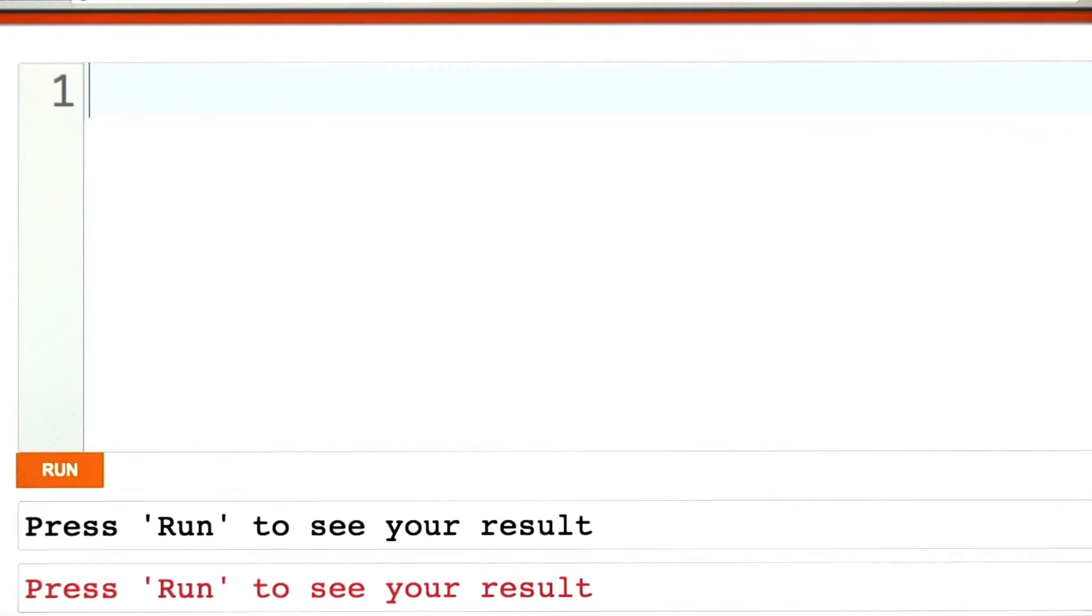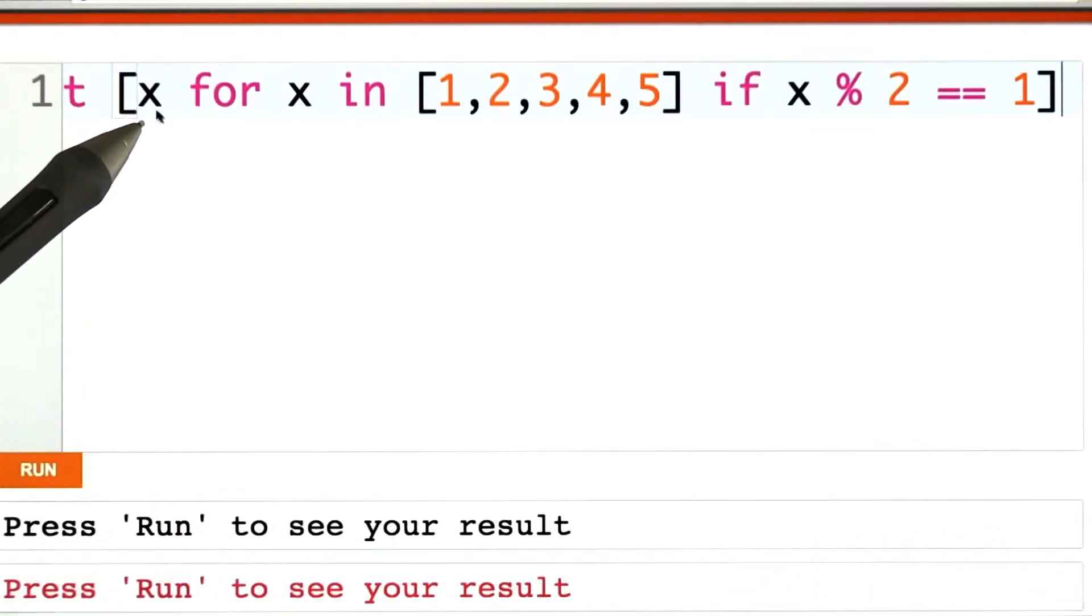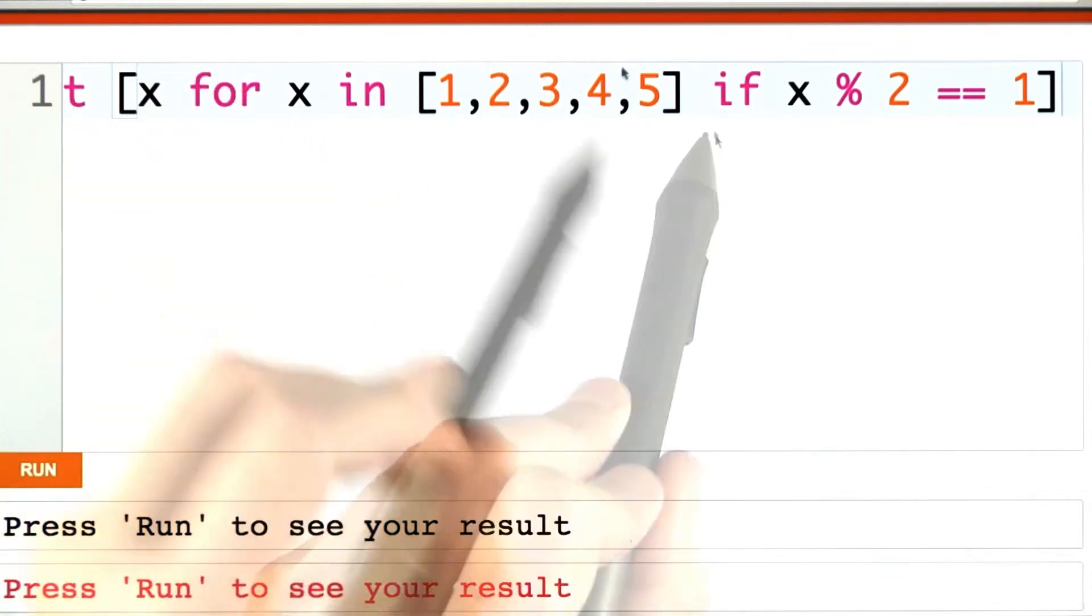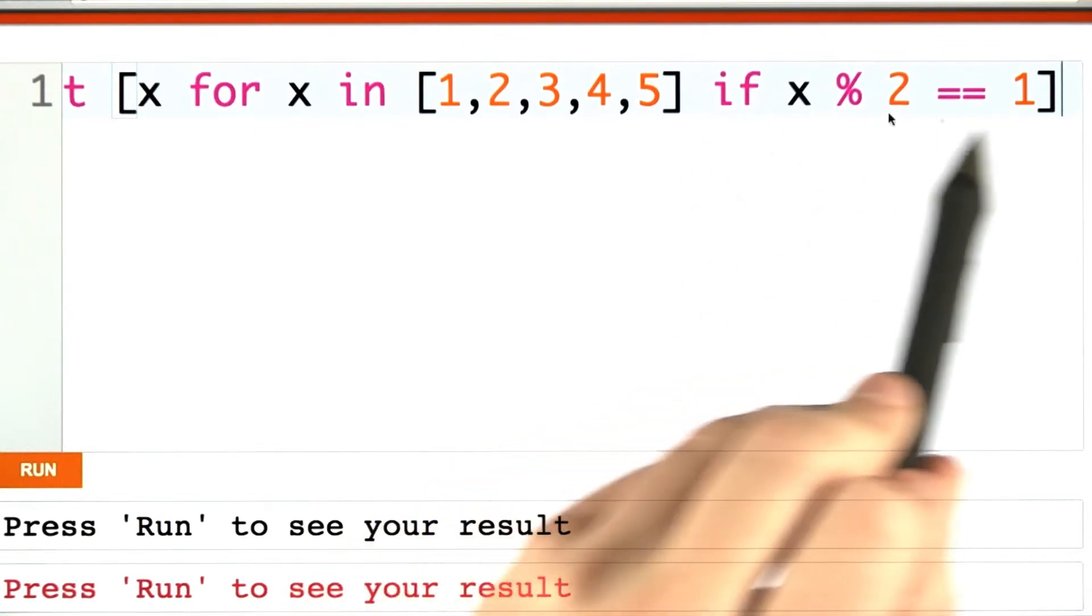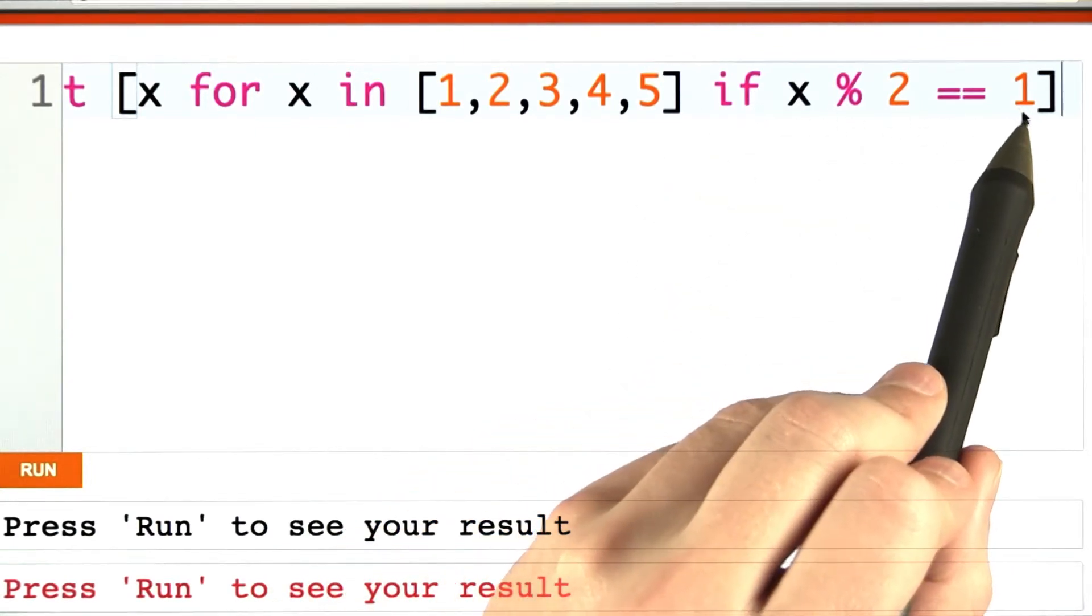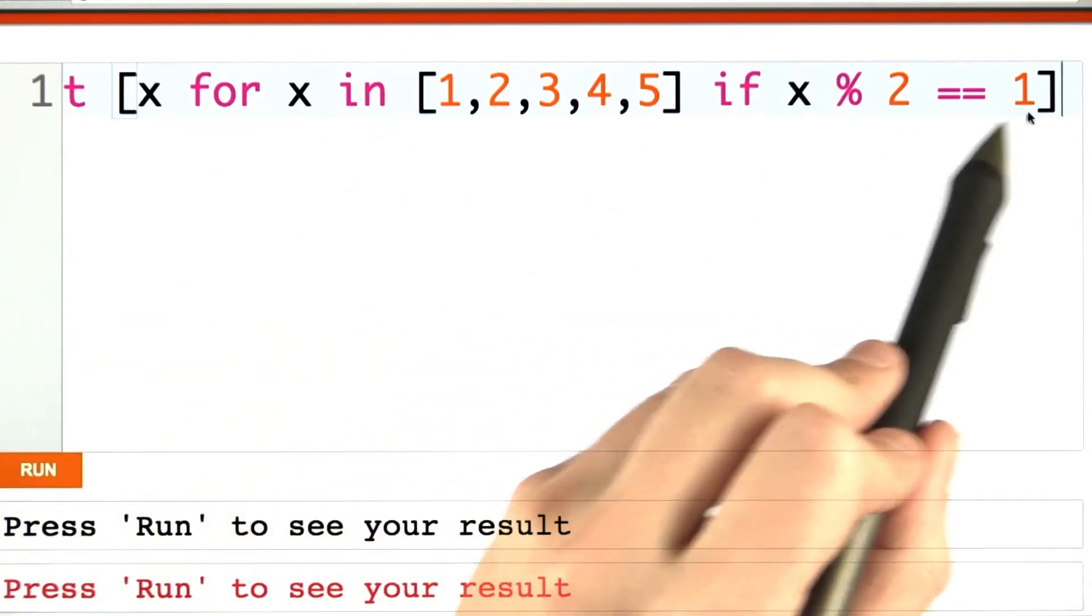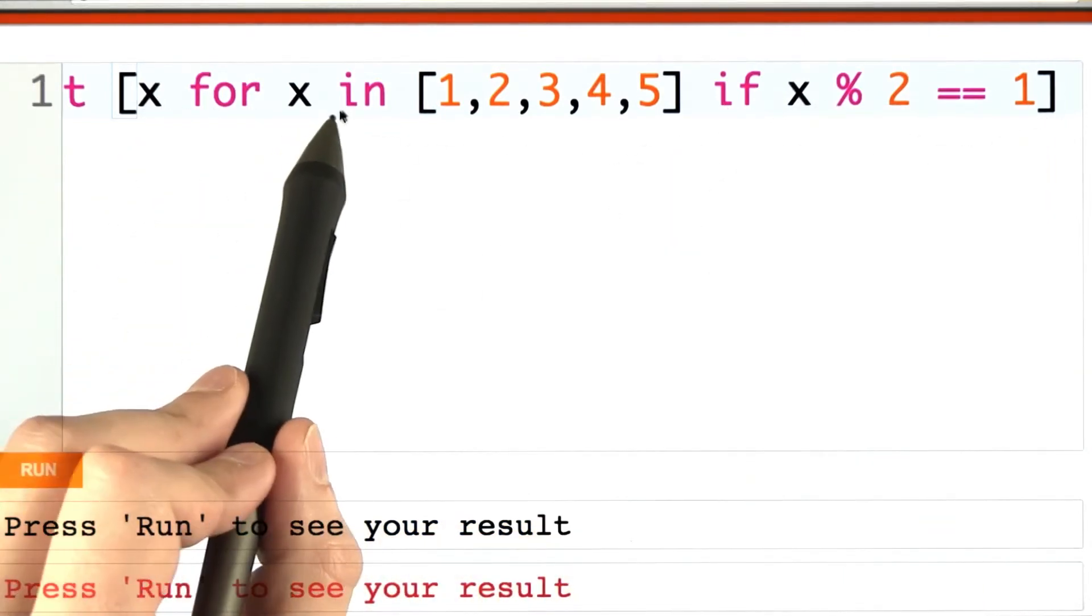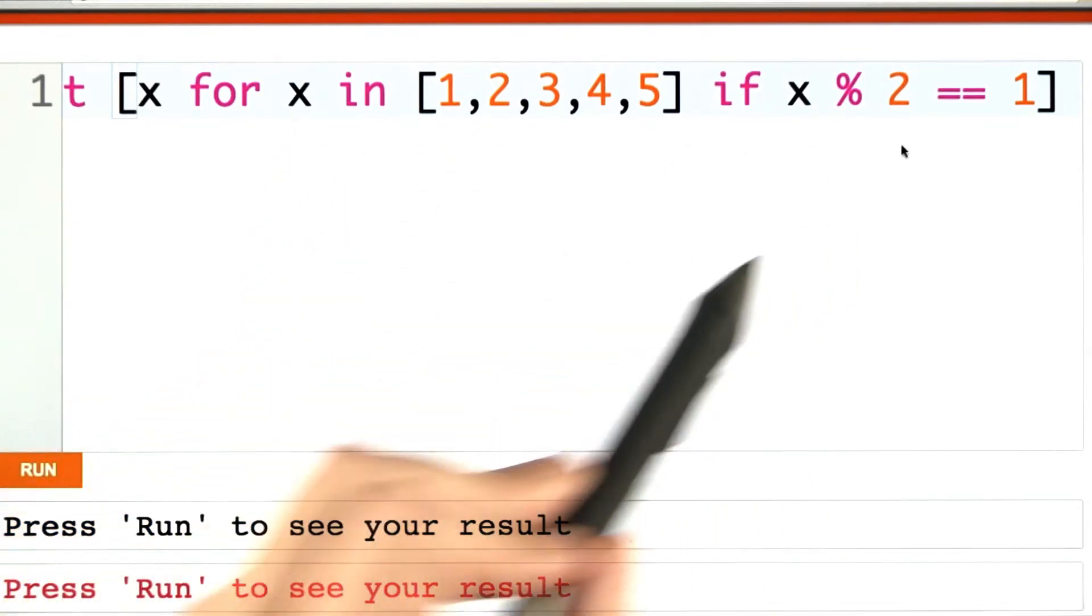I'm also going to show you an even easier way to do this. Here I've written a list comprehension. I want x for x in 1, 2, 3, 4, 5. But over here on the right I've put this sort of if conditional, a guard or a predicate we might call it in mathematics. This is saying I only want you to yield those numbers for which the predicate is true. Only include x in the answer if x was an odd number.